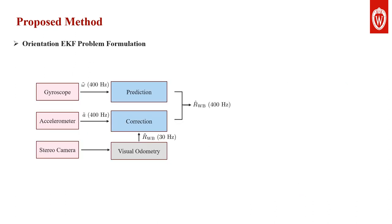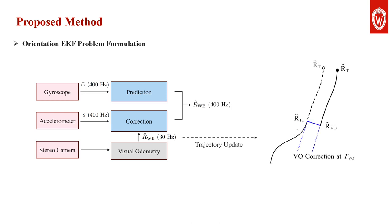The absolute orientation output from visual odometry is used as an additional measurement alongside the accelerometer to improve the EKF estimation. The latency of visual odometry is addressed by trajectory update.